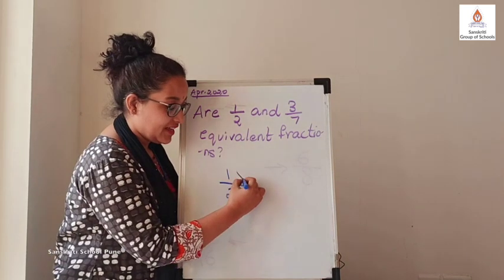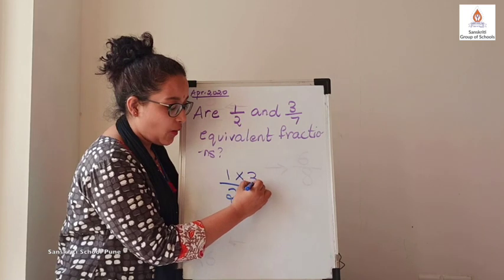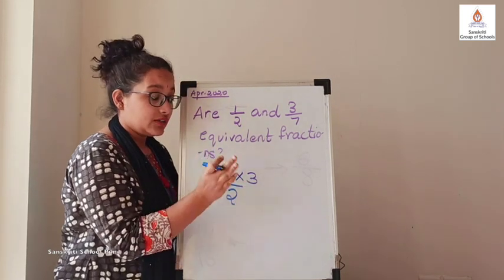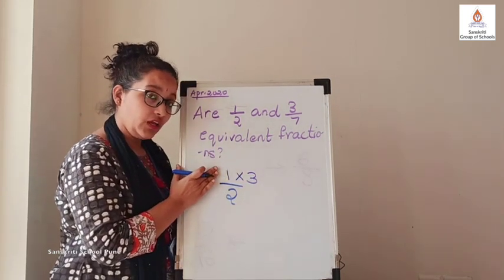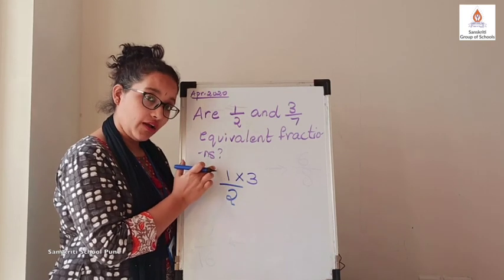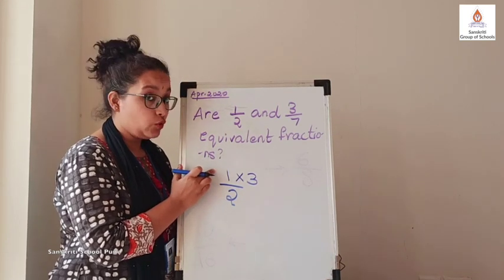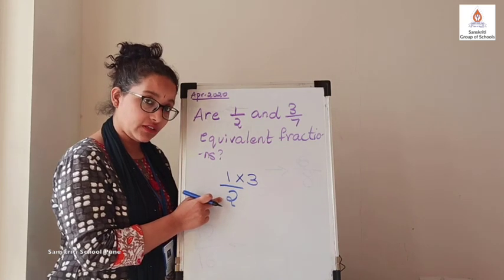Exactly. When we multiply both, so when we are multiplying 3 with 3 on the numerator, you also need to multiply denominator by 3.